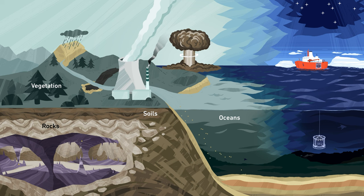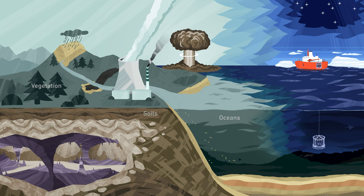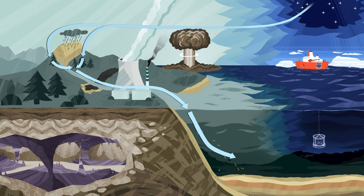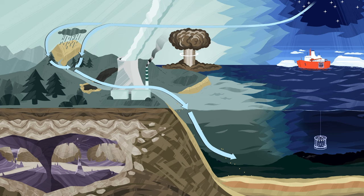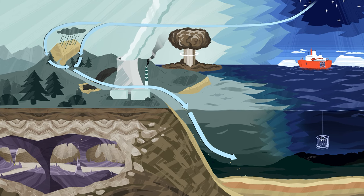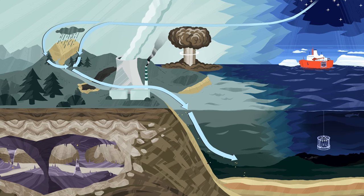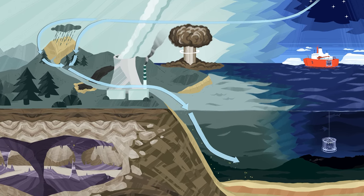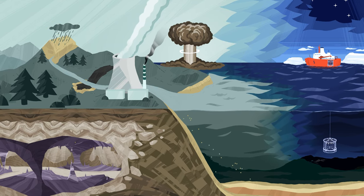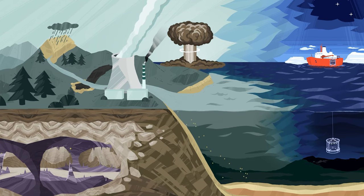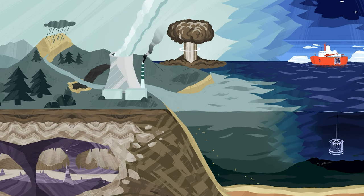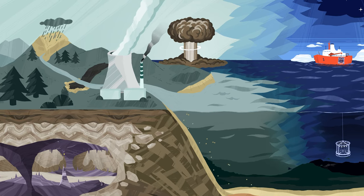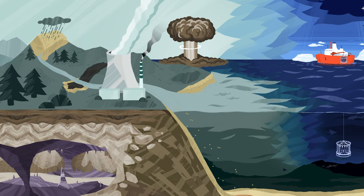To sum up, the provenance analysis of organic carbon means tracing the processes in which carbon moves along a source-to-sink transect. The magnitude, efficiency and timescales of these carbon fluxes are key for understanding the controls on atmospheric chemistry over geologic timescales.